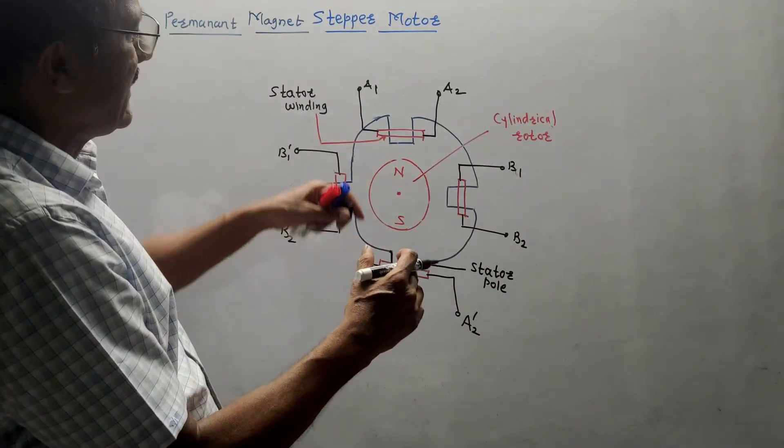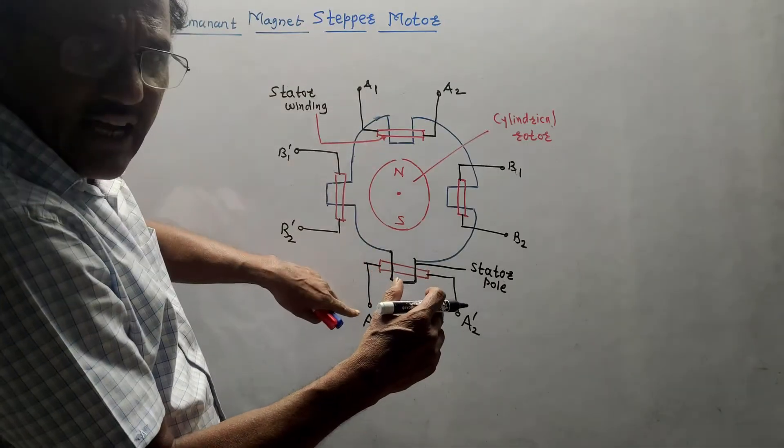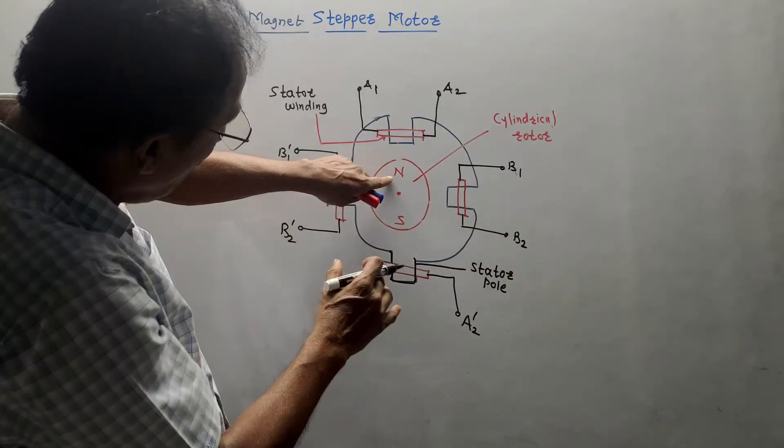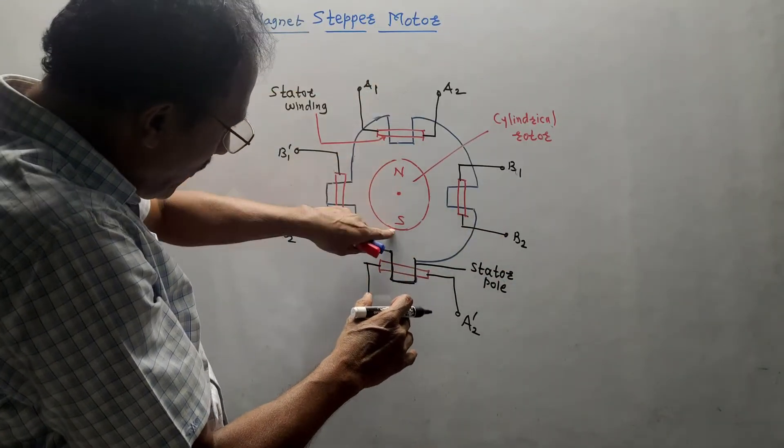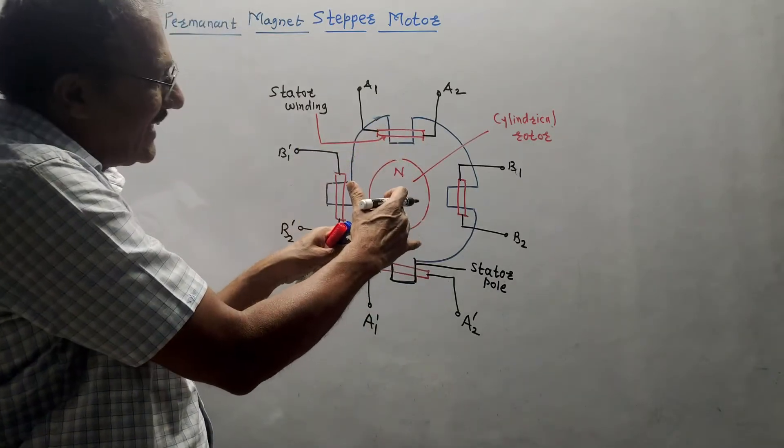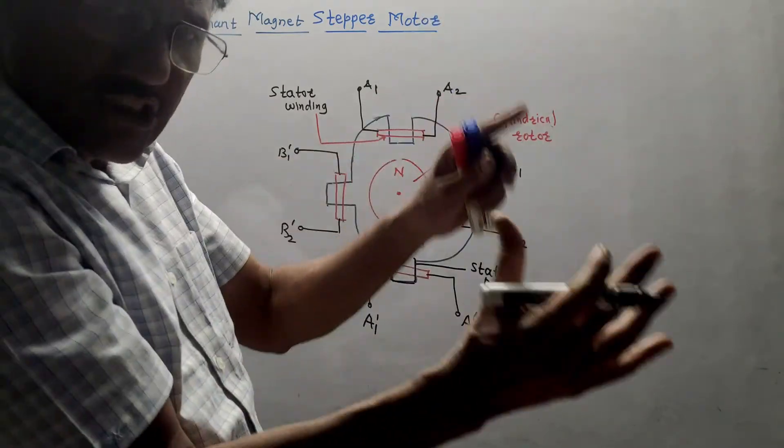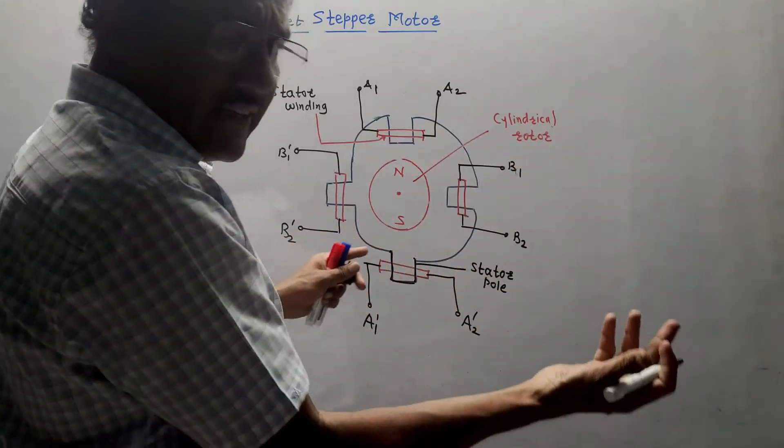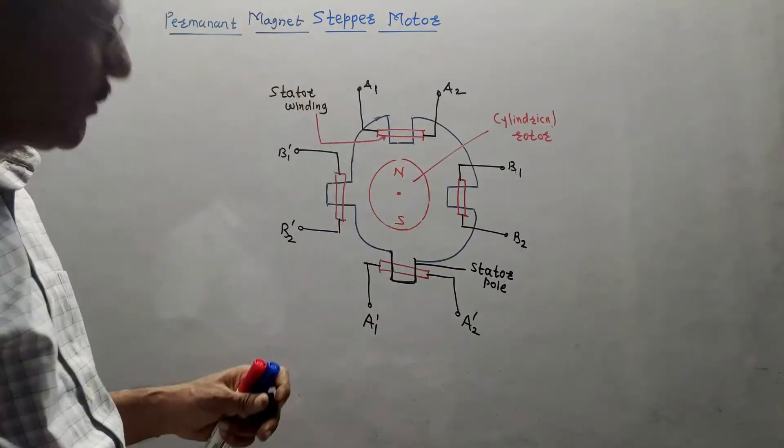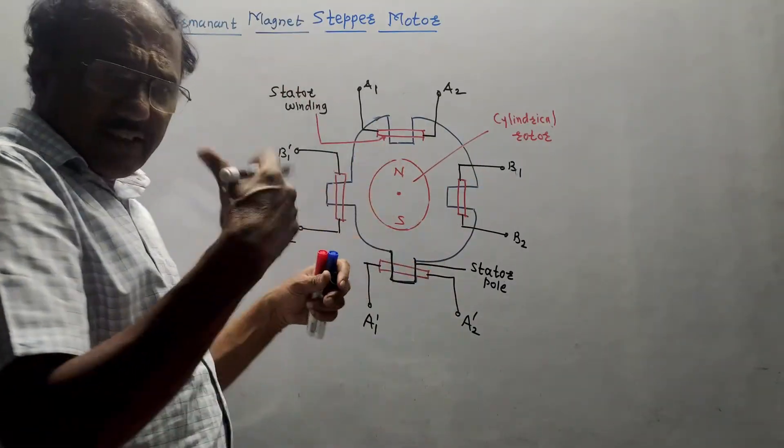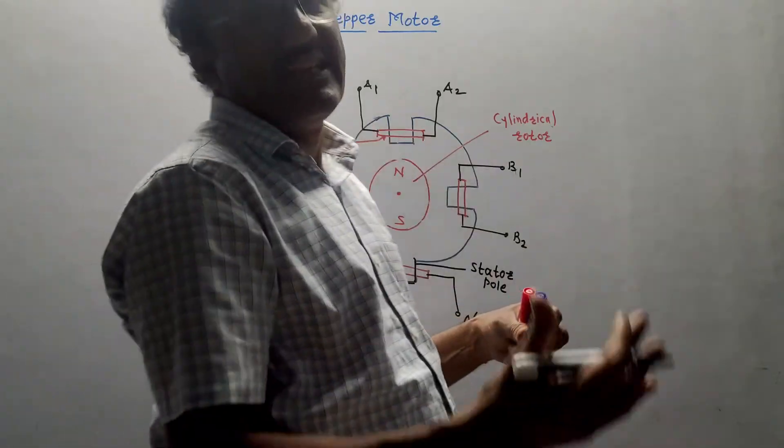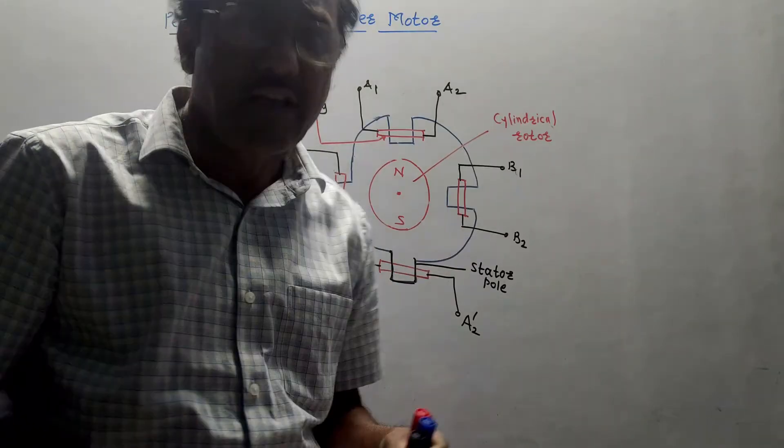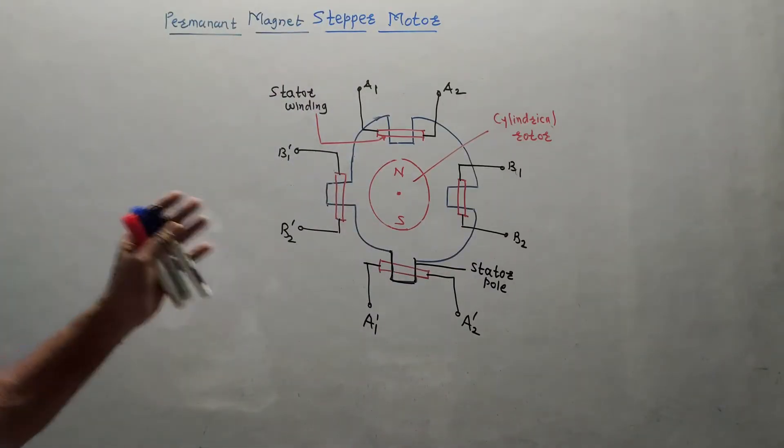Suppose, I will first energize the coil A1 and A1 dash. Then, in that case, this rotor will try to align itself in such a way that North pole will be along A1 and South pole will be along A1 dash, which I have already shown in this diagram. Accordingly, if you go on changing the energizing sequence, then rotation of the rotor takes place each time by, say, 90 degree, depending on the sequence of energy that you are providing. Actually, this sequence of energy or sequence of the windings is provided using the microcontroller. So, biggest advantage of this type of stepper motor is that there is no requirement of external source.